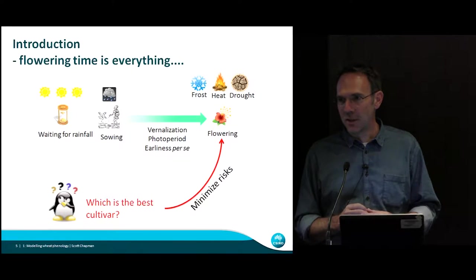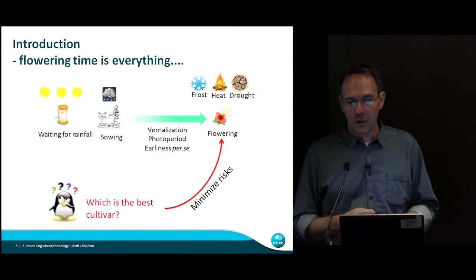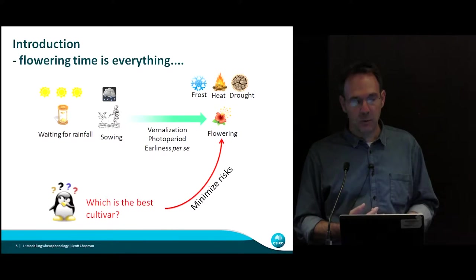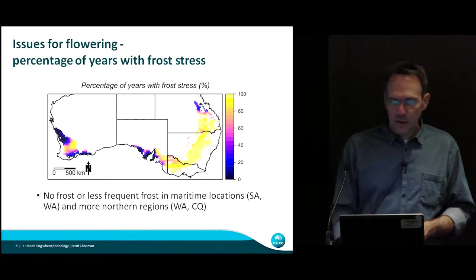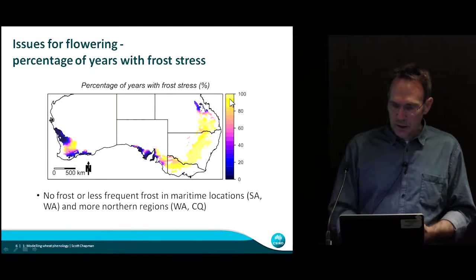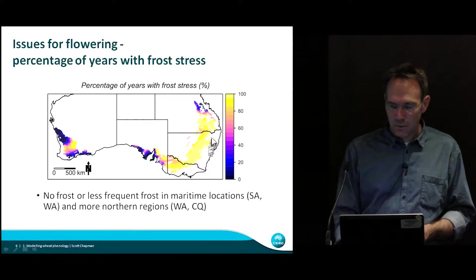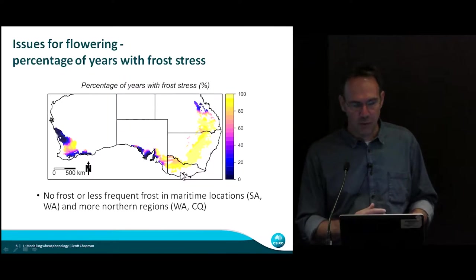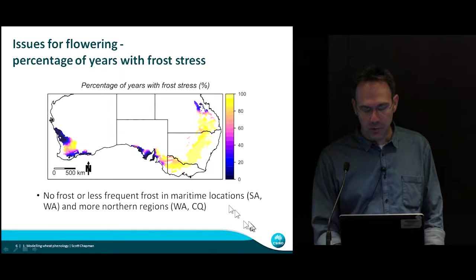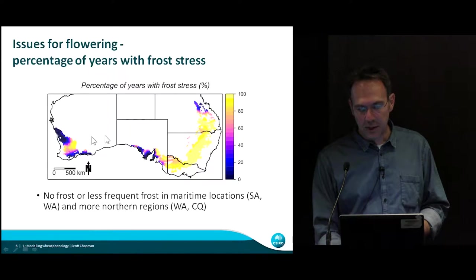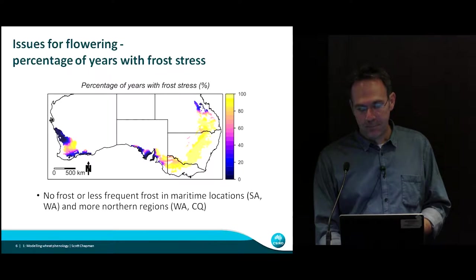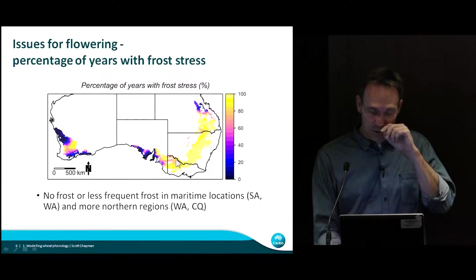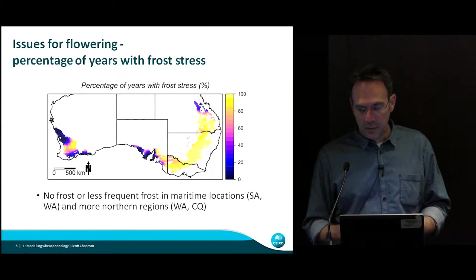Trying to get the flowering time right is a challenge. But if we can look across large numbers of years using weather data, we can see what would be the on-average optimal flowering time and how to achieve it. These are percentages of years with frost stress — you can see that in the eastern wheat belt you get frost every year. The only places you really don't get much frost are in maritime environments in South Australia and the north and south of the western belt. That data goes back to 1957.